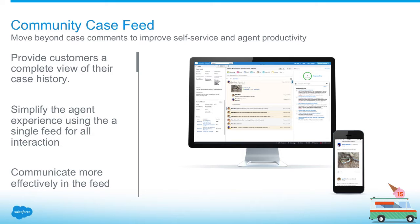We're moving away from the traditional model where agents had to go outside the case feed, create a separate object — a case comment — and then share that out to customers. Instead, we're letting agents use the case feed itself to directly communicate out to customers in the community. The first advantage is that we can now provide customers a complete view of their case history, so they're no longer limited to just plain text snippets passed through the agent.